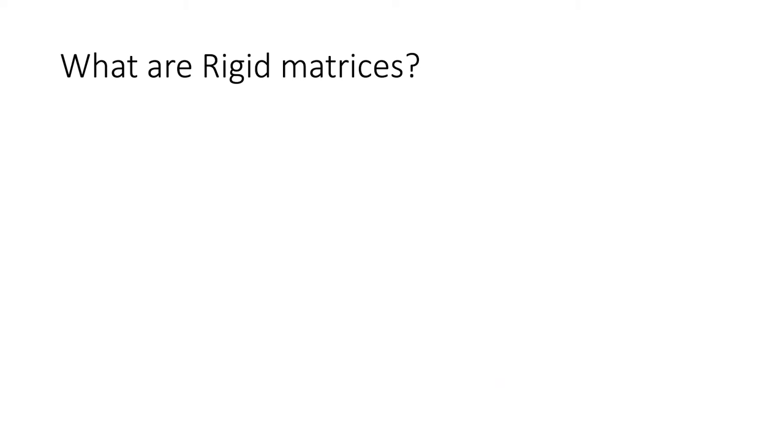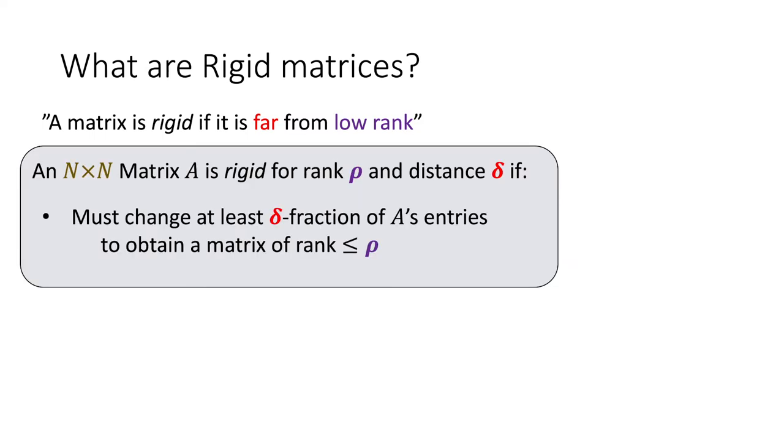First off, what are rigid matrices? A matrix is rigid if it's far from being low rank. Rigidity has a rank parameter rho and a distance parameter delta, and a matrix is rigid if not only is its rank higher than rho, but also to lower its rank to rho you'd have to change at least a delta fraction of its entries.